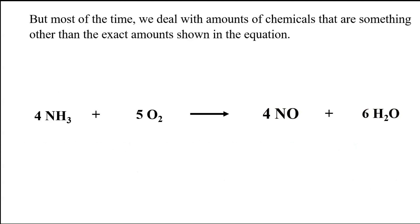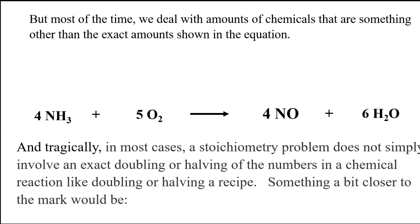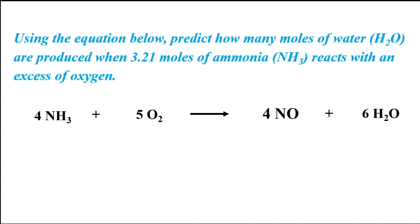That's easy enough, right? But most of the time, when we deal with these chemicals in amounts that are other than the exact amounts shown in the equation, it's not as neat and orderly as it is in a recipe. As it says here, tragically, you're not going to mainly be either doubling or halving anything. You've got to do a little bit more complicated math, but not a lot more complicated.